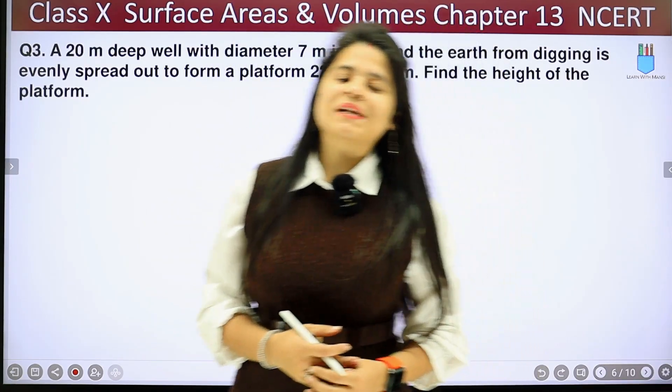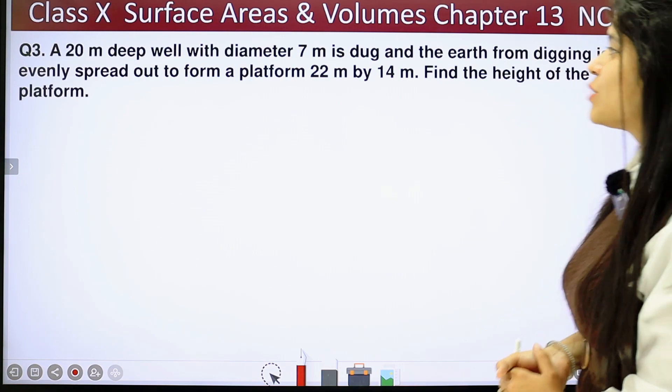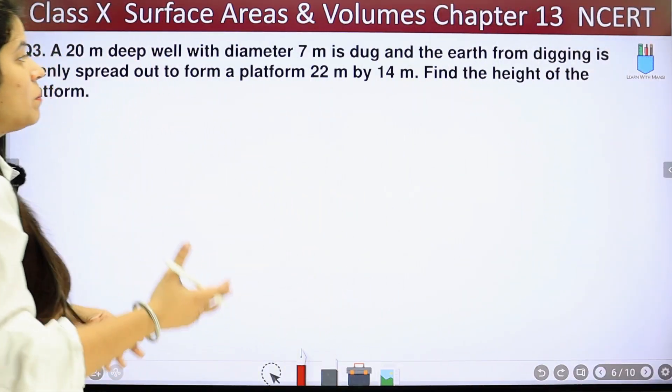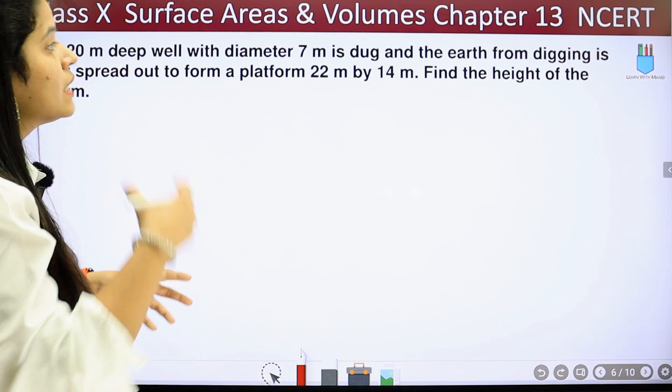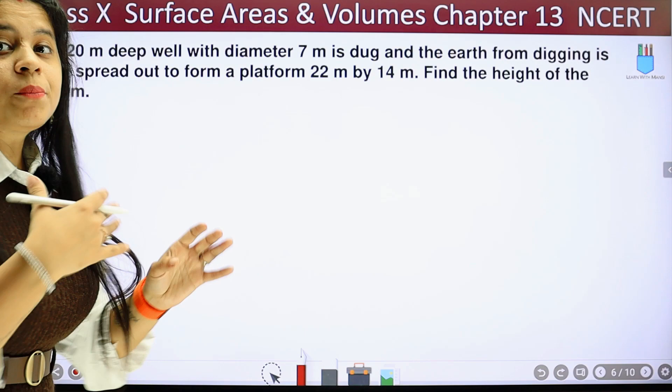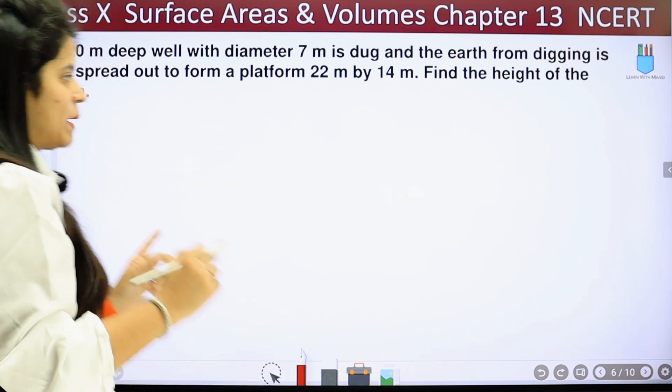Hello my lovely students, this is Mansi. Welcome back to the channel. We are on the third question of exercise 13.3. The question says: a 20 meter deep well with diameter 7 meter is dug and the earth from digging is evenly spread out to form a platform 22 meter by 14 meter. Find the height of the platform.